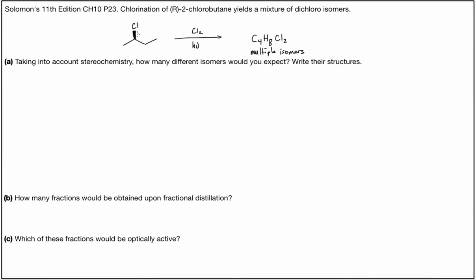In this problem-solving screencast, we're going to look at problem 23 of chapter 10 in Solomon's 11th edition of Organic Chemistry. The problem gives us the chlorination of R-2-chlorobutane, which is going to yield a mixture of dichloroisomers. Here's the reaction as written out. So here's our R-2-chlorobutane treating with molecular chlorine in the presence of light, and it's going to yield multiple isomers of this molecular formula C4H8Cl2.